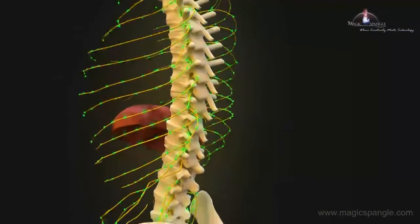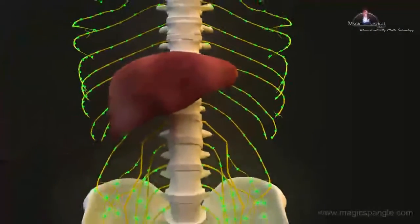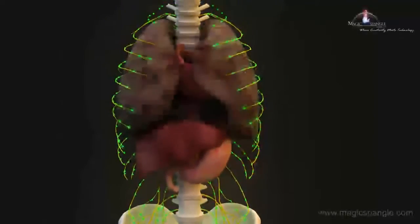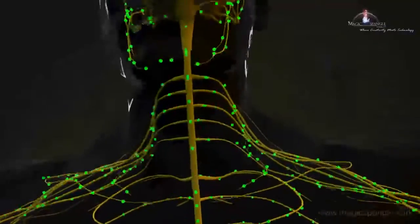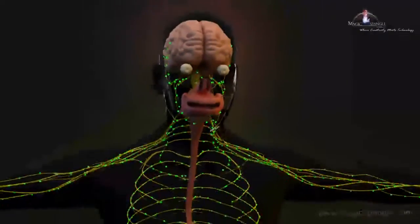As we move up the spine to the upper back or thoracic spine, the exiting spinal nerves supply such organs as your liver, stomach, heart, and lungs. Moving up further to your neck, these nerves supply such structures as your eyes, ears, throat, and arms.